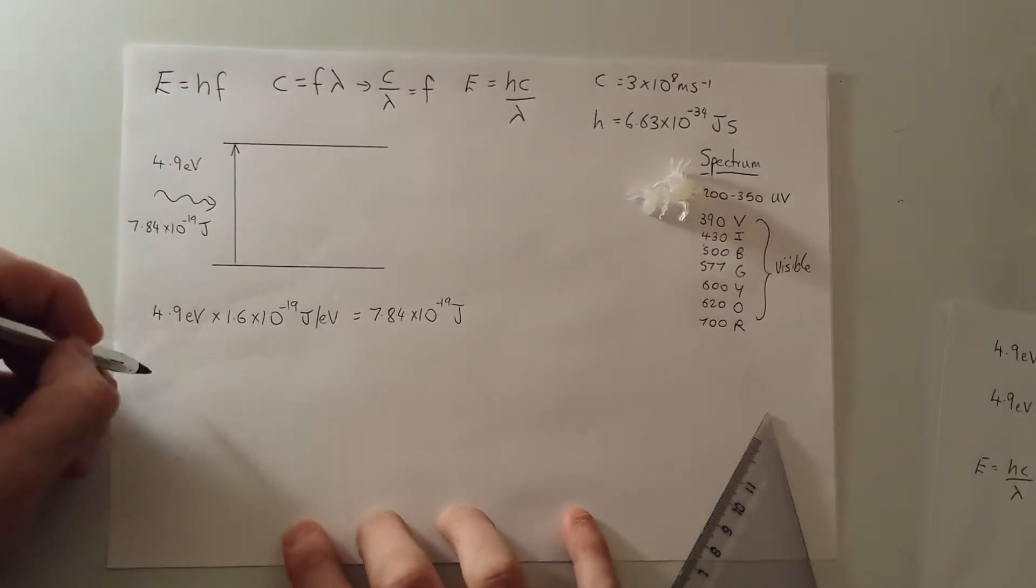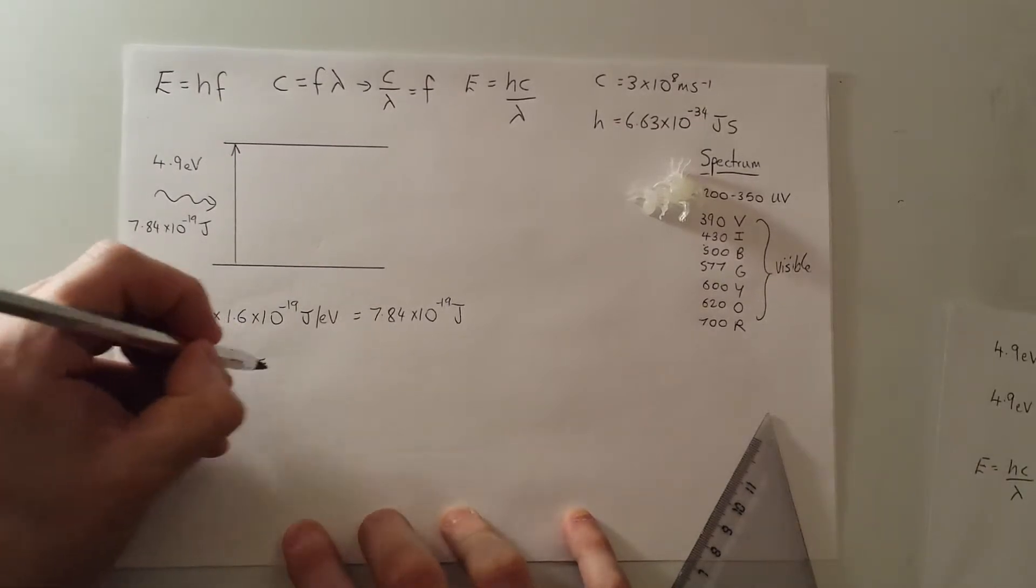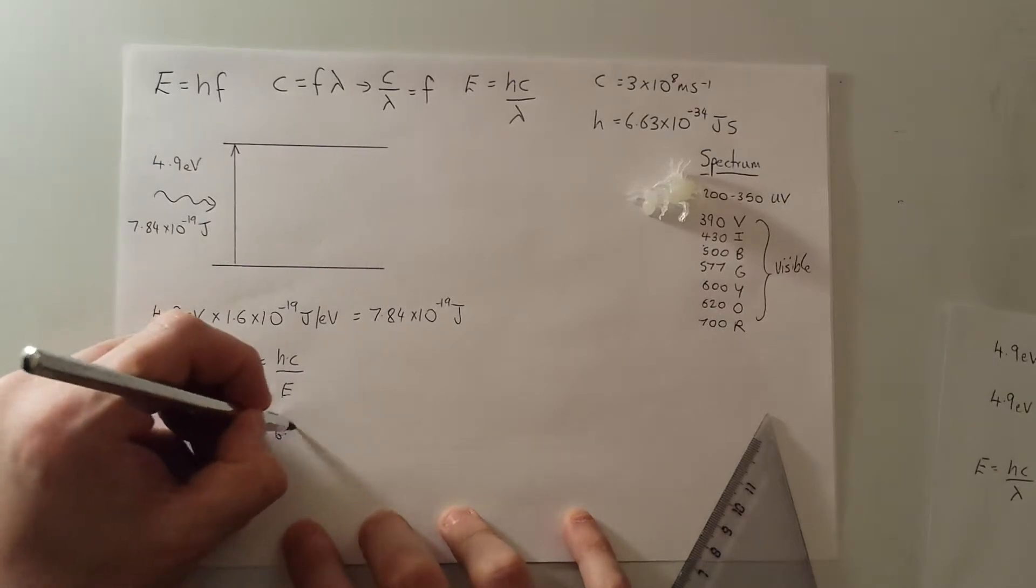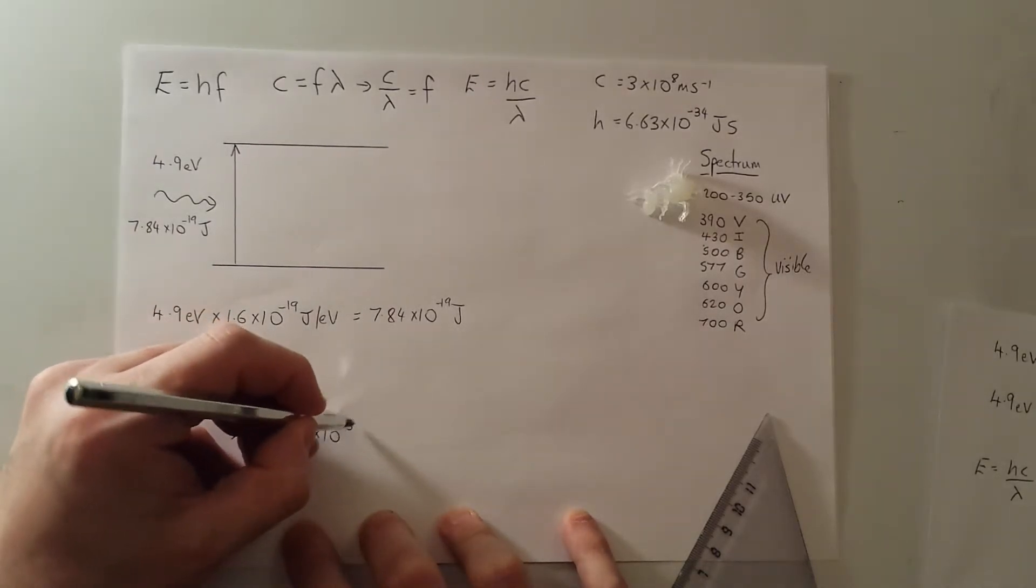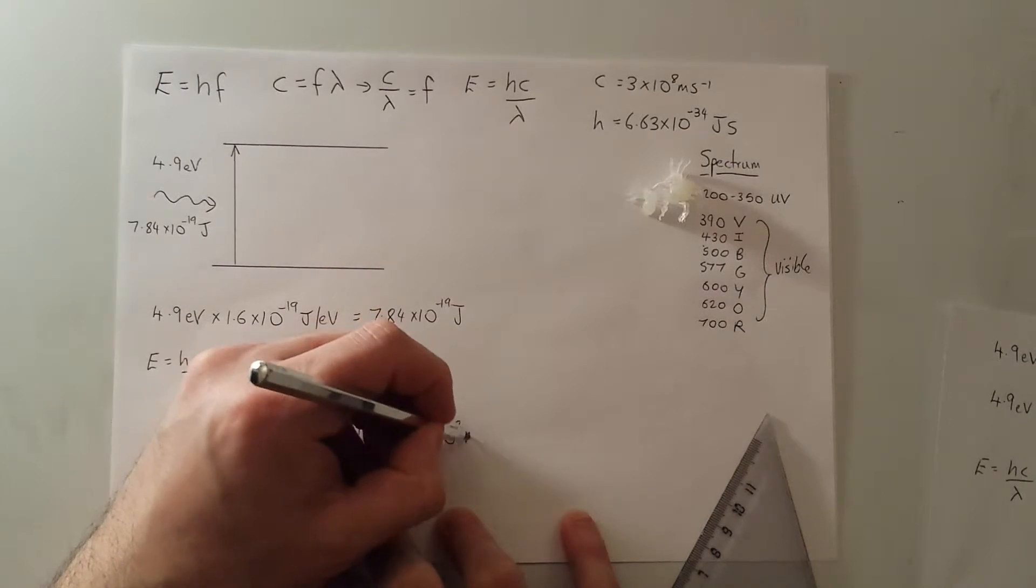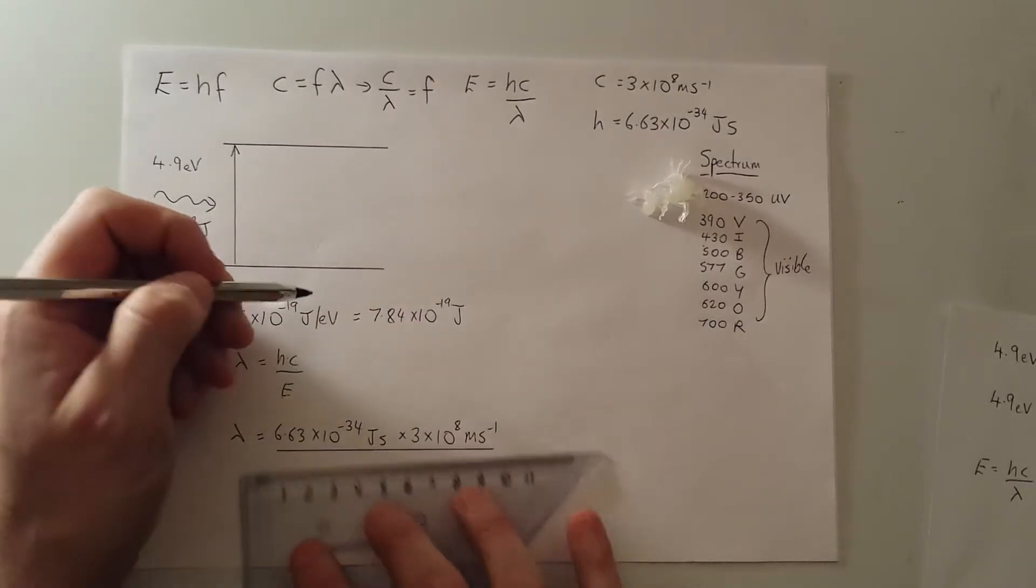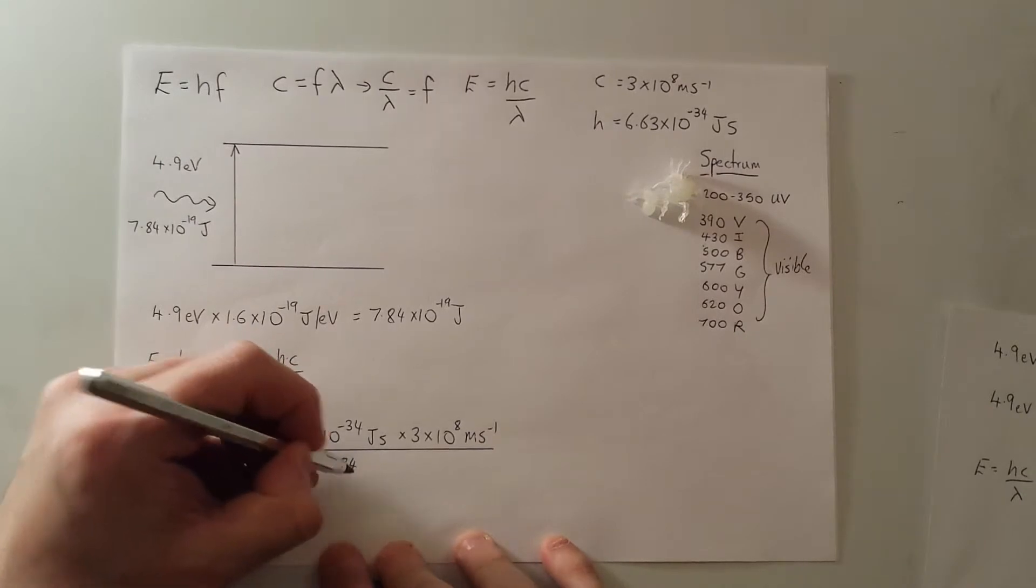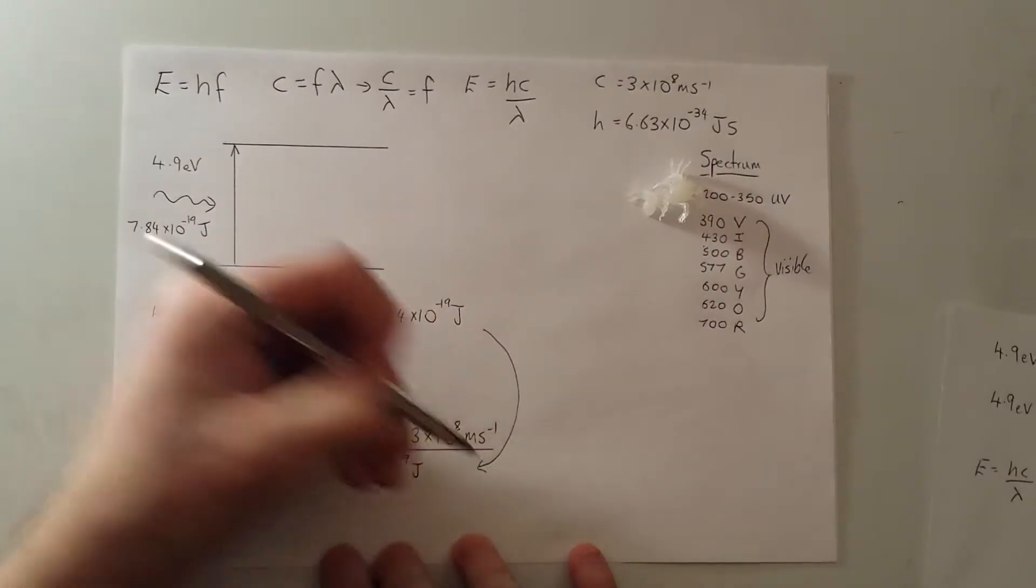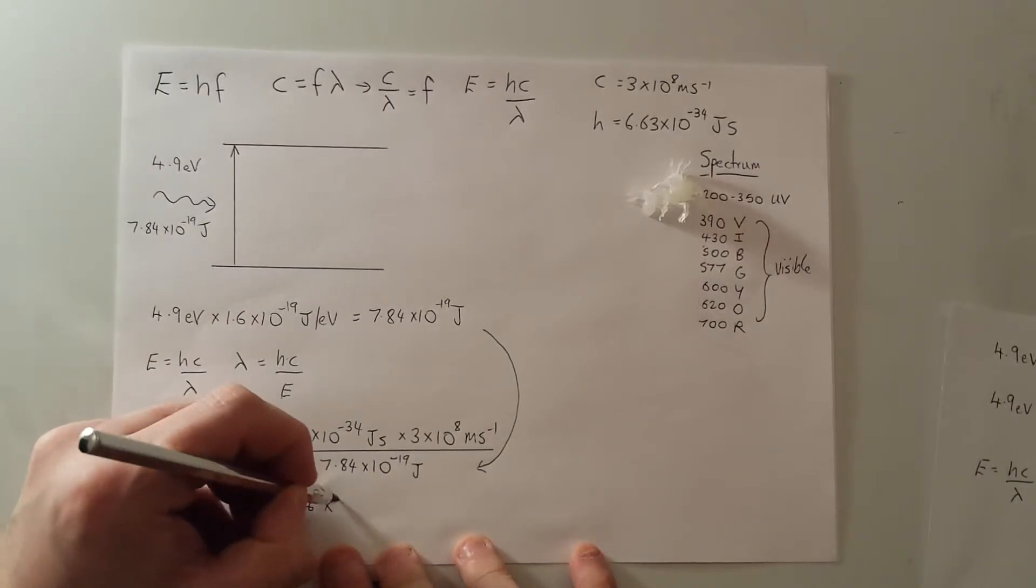So let's use then the E equals HC over lambda formula. Okay. And we'll rearrange that to lambda is HC over E. And of course, I now know E, I know H and I know C. So let's do lambda is 6.63 times 10 to the minus 34 joule seconds. The speed of light is 3 times 10 to the 8 meters per second. Now that's a very long bit there. So let's put a ruler in. It's a really neat divide. We divide it by the energy of the incoming photon, which we've already worked out. So let's put an arrow down in there, because we've worked that out previously. That gives us 2.536 times 10 to the minus 7.